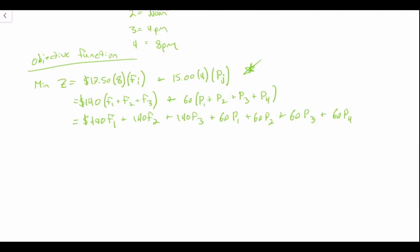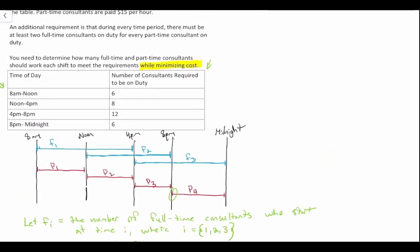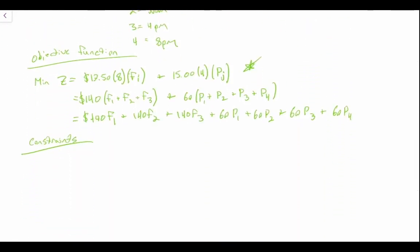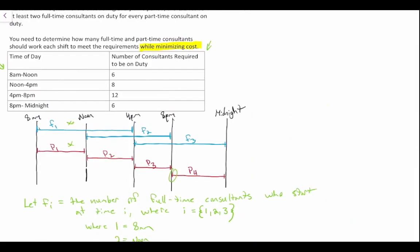Our constraints are as follows. The number of consultants required from 8 a.m. to noon must be at least 6. During that period, we have full-time staff who started at 8 a.m. (F1) and part-time staff who started at 8 a.m. (P1). So the constraint is: F1 + P1 ≥ 6.